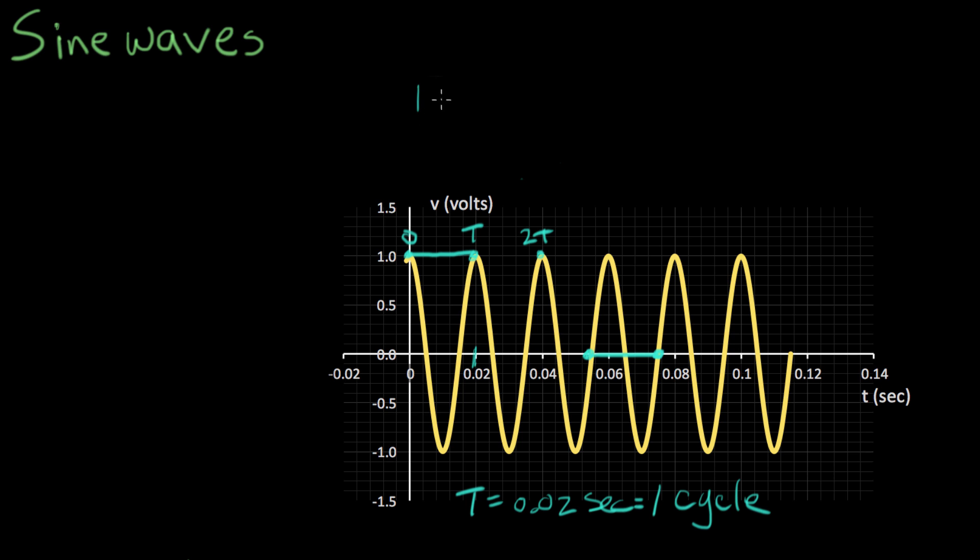So we can say that one cycle happens every T seconds. And in our particular case, it's one cycle per 0.02 seconds. And if we take the reciprocal of .02, we get the answer to be, that's 50 cycles per second. That's the speed. That's the repetition rate of this sinusoid. 50 cycles per second.